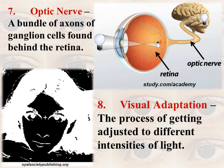The optic nerve is a bundle of axons of ganglion cells found behind the retina. The retina's sensory receptors convert the physical light stimulus into neural impulses. These neural impulses travel through the optic nerve, which is found just behind the retina, and carry them to the occipital lobe of the brain, where the object is interpreted and seen.